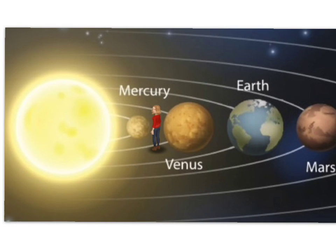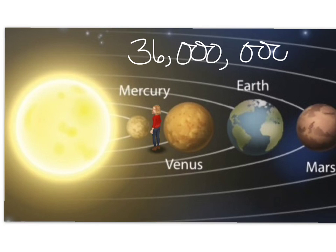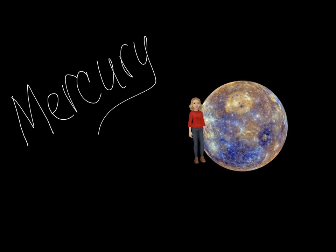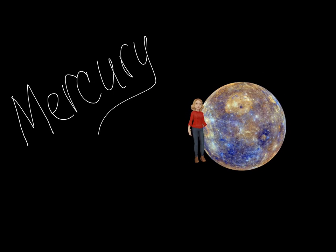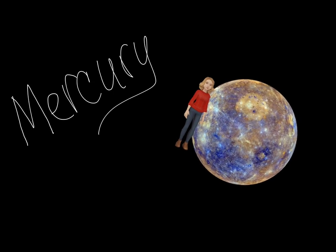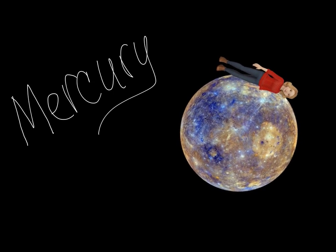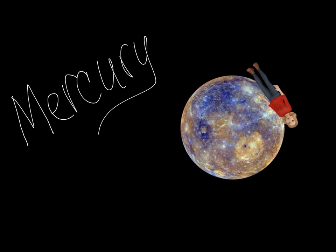Mercury is the planet closest to the Sun, even so it is 36 million miles away from it. It takes 88 days for Mercury to orbit the Sun, compared to the Earth which takes 365 days. Mercury turns very slowly on its axis, taking 59 days to complete the turn from day to night.